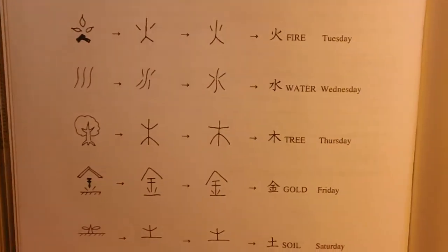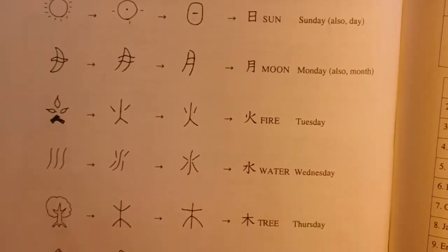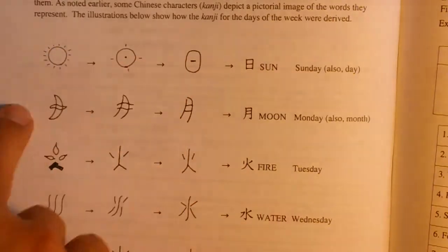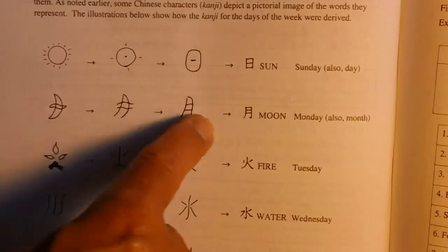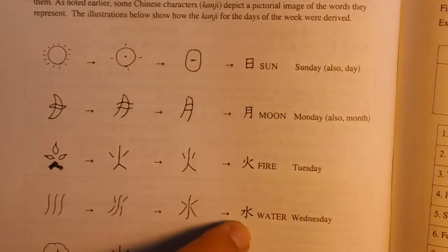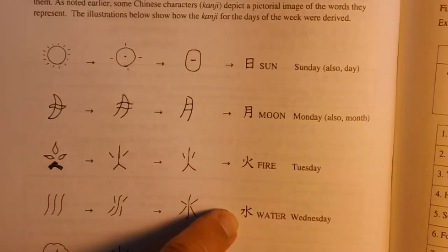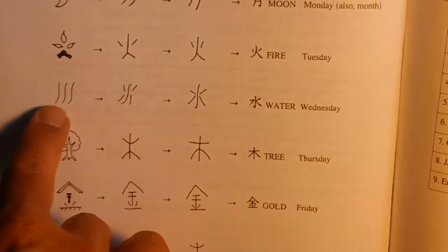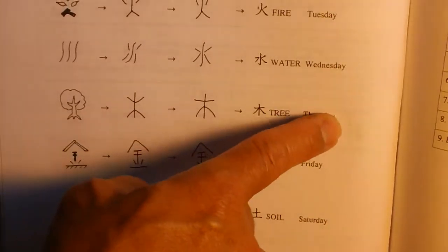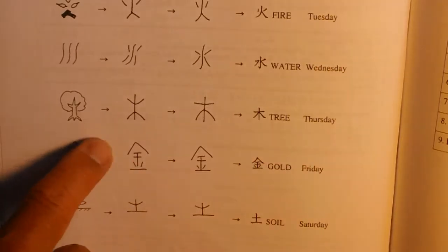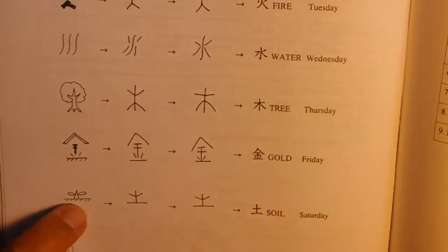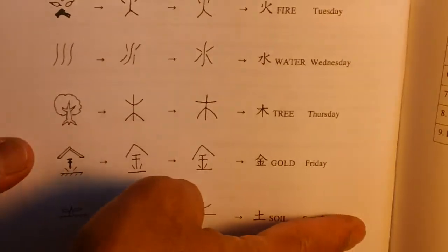General information about the kanji for days of the week — these are Chinese characters. 日曜日 came from 'sun' and looks like the sun. 月曜日 looks like the moon. 火曜日 looks like fire. 水曜日 — 水 means water. 木曜日 looks like a tree. 金曜日 — 金 means gold, like a gold mine. 土曜日 — 土 means soil.